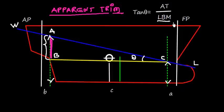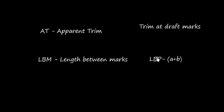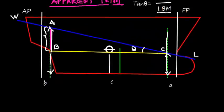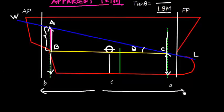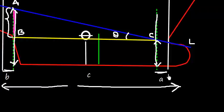BC is LBM — that is, the length between marks — where this is the forward mark and this is the aft mark, so the distance between them is LBM. LBM equals LBP (length between perpendiculars) minus a minus b. The total distance is LBP, and subtracting distance a at the forward end and distance b at the aft end gives us LBM.